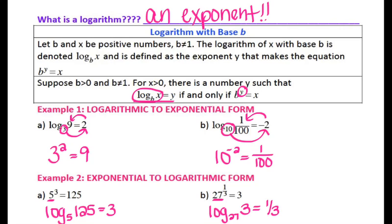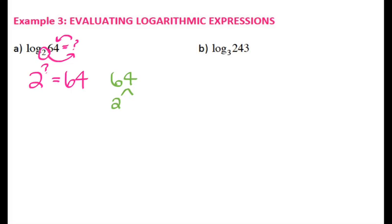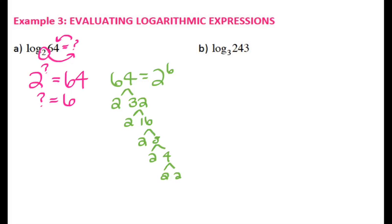Logarithms are useful for evaluating exponents or solving for exponents, which we'll do later on. So for evaluating logarithmic expressions, we want to know what log base 2 of 64 equals. Your logarithm always equals an exponent, so we're figuring out what that exponent is. I'll change this to exponential form: 2 to some power equals 64. Breaking 64 apart in terms of 2 — 2 and 32, 2 and 16, 2 and 8, 2 and 4, and 4 is 2 and 2 — so 64 is 2 to the 6th power. That means log base 2 of 64 equals 6.